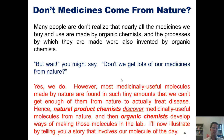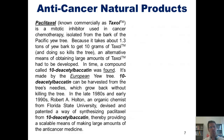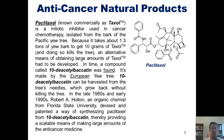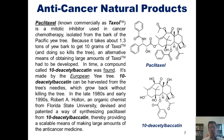I'll now illustrate this by telling you a story that involves our molecule of the day. Paclitaxel, commonly known as Taxol, shown here, is a mitotic inhibitor used in cancer chemotherapy that is isolated from the bark of the Pacific yew tree. Because it takes about 1.3 tons of yew bark to get 10 grams of Taxol — and doing so kills the tree — an alternative means of producing large amounts of Taxol had to be developed. A natural compound is out there, but we'd have to ravage nature to obtain enough of it to actually treat any disease.